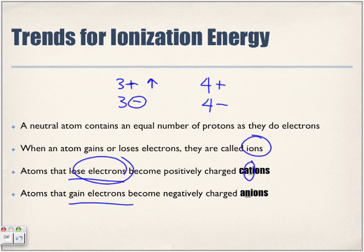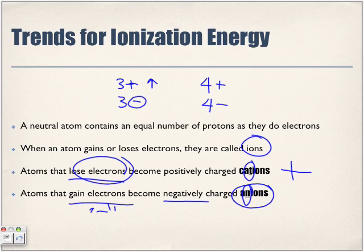We underline the letter T in cation because the T looks like a positive sign — positively charged atoms. Atoms that gain electrons become negatively charged. Electrons carry a negative charge, so if they gain electrons, they become more negative and form ions called anions. We underline the letter N — N for negative — to remember what kind of ion we call atoms that gain electrons.